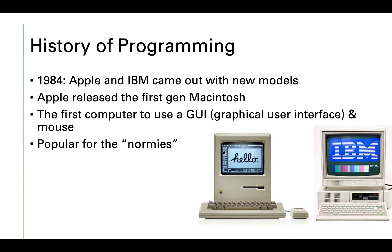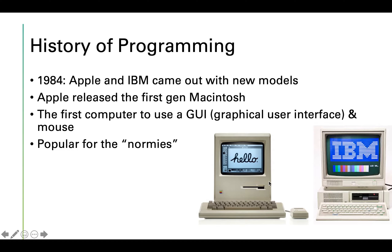Getting closer to the modern day: in 1984, Apple released the first-generation Macintosh — the first computer to use a GUI, graphical user interface, and a mouse. This made computers more user friendly for everyday people. Before GUIs, people used the terminal — just a black box with white text and no mouse.